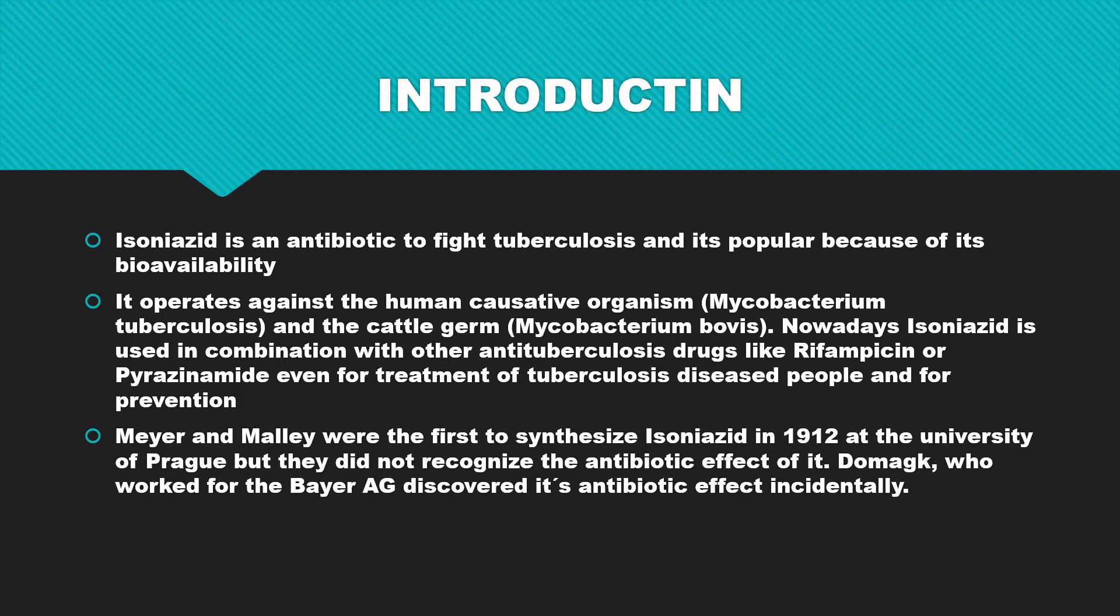Nowadays isoniazid is used in combination with other tuberculosis drugs like rifampicin or pyrazinamide for treatment of tuberculosis, diseased people, and for prevention.